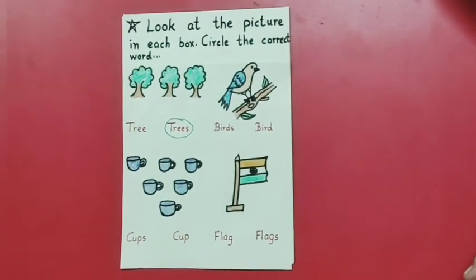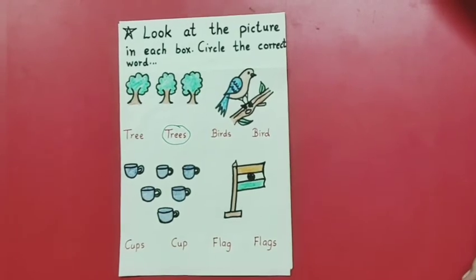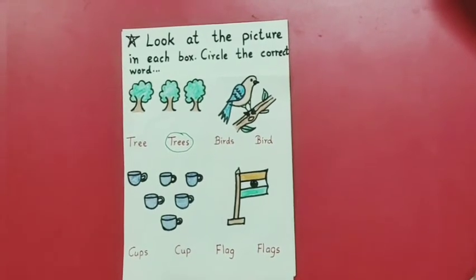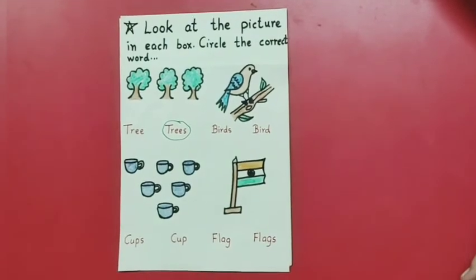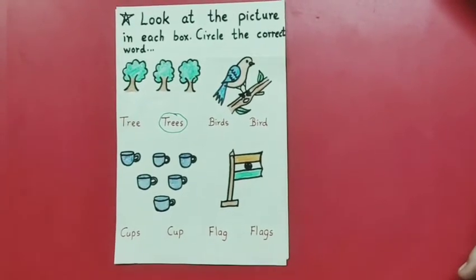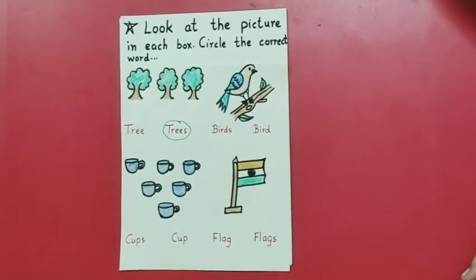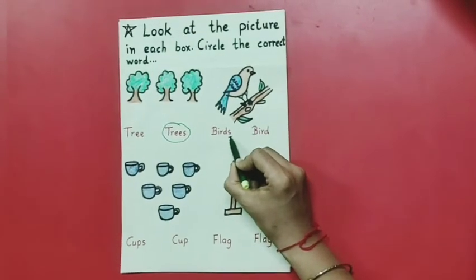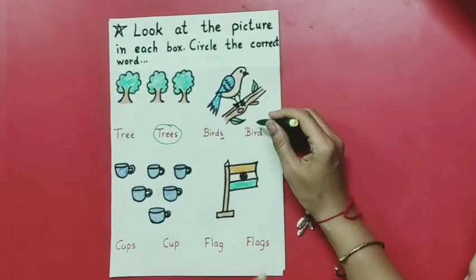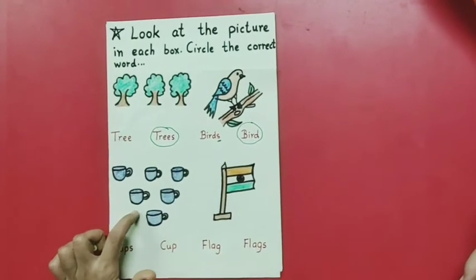Moving to our next picture — whose picture is this? Bird. You see birds around your home and elsewhere. But here only one bird is drawn. How many? Only one. So we will circle the spelling in which 'S' is not added, meaning it is single. You can see this spelling has 'S' — that means many. But here only one is drawn, so we circle B-I-R-D, bird.